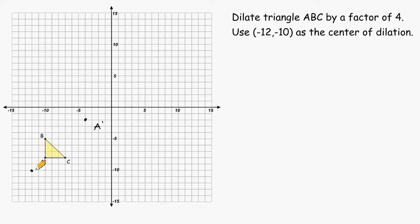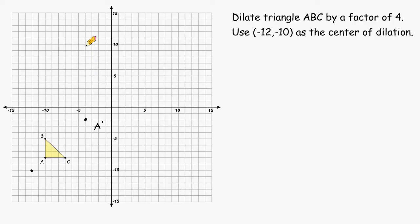Next, let's figure out the distance of the center of dilation to point B. We would have to move 2 to the right in the x direction and 5 up in the y direction. So if we go over 2 and up 5, we just have to repeat this process a total of 4 times. Over 2 and up 5 four times would put us right here at negative 5, positive 10. And now we can label this point B.